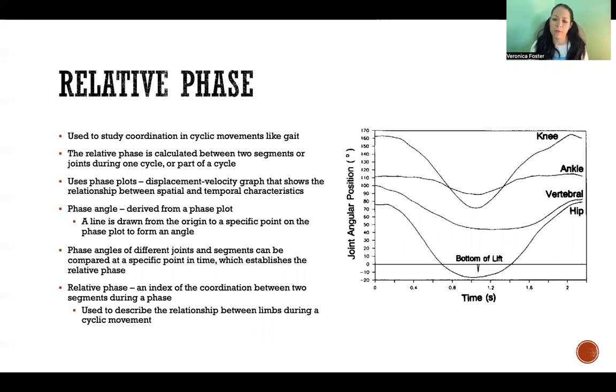So we can get the phase angle from the phase plot by drawing a line from the origin to whatever specific point on the graph that we want to go to. So like, let's say we wanted to look at the time 0.4 seconds here. So we could draw a line starting at the origin to each of our joints here that are shown on the plot at that time point. So we would get four different angles starting from the origin, extending to the different joints at that particular time point. So then we can compare those angles.